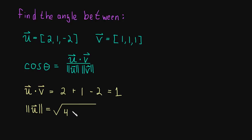2 squared is 4, plus 1 squared is 1, plus negative 2 squared is 4, so plus 4. This is the square root of 9 if we add those together and the square root of 9 is just 3.